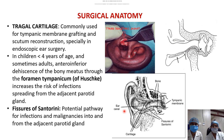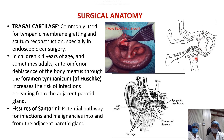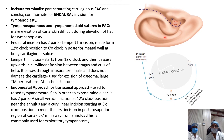Regarding surgical anatomy: the cartilage of the pinna can be used for reconstruction of ossicles or the scutum, especially in endoscopic ear surgery. In children under 4 years, the anteroinferior dehiscence of the bony meatus through the foramen of Huschke increases the risk of spread of infection between the middle ear and the adjacent parotid. Similarly, the fissures of Santorini in the cartilaginous portion allow infection to pass between the parotid region and the canal. The incisura terminalis is deficient of cartilage, so an incision can be placed there safely.